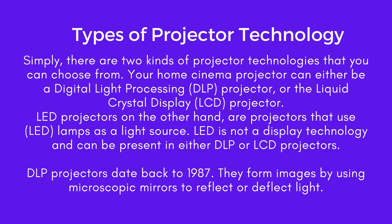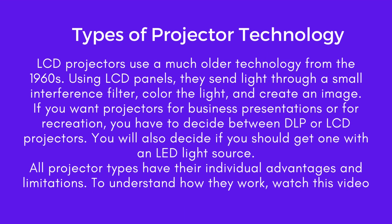DLP projectors date back to 1987. They form images by using microscopic mirrors to reflect or deflect light. LCD projectors use a much older technology, from the 1960s, using LCD panels to send light through a small interference filter, color the light, and create an image. If you want projectors for business presentations or for recreation, you have to decide between DLP or LCD projectors, and also decide if you should get one with an LED light source.